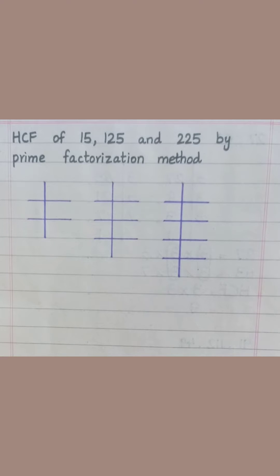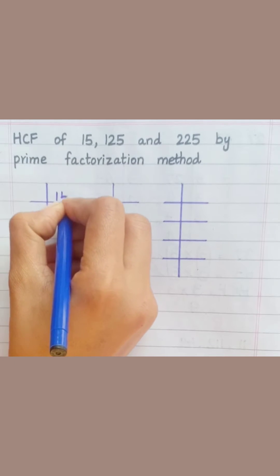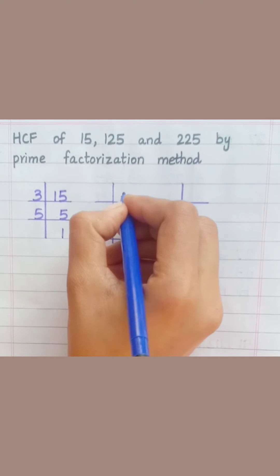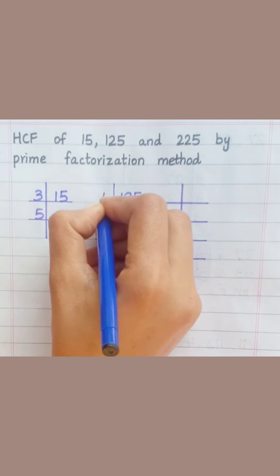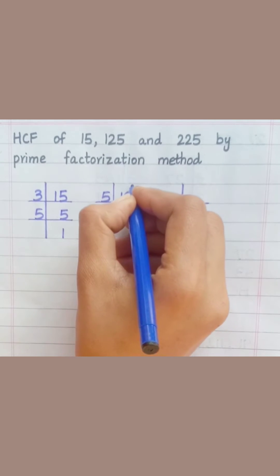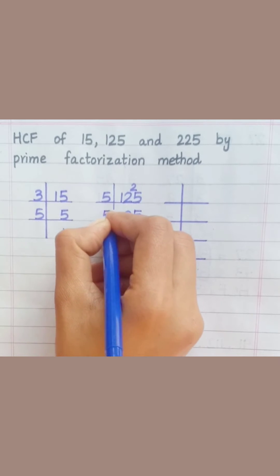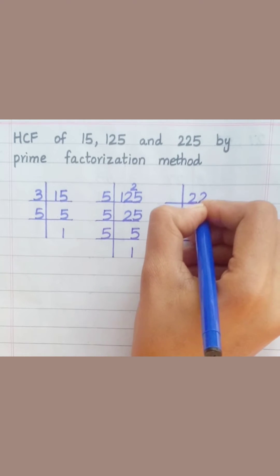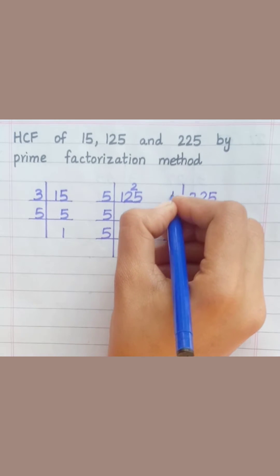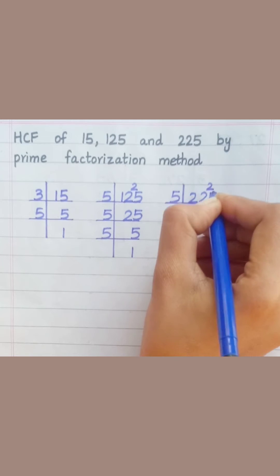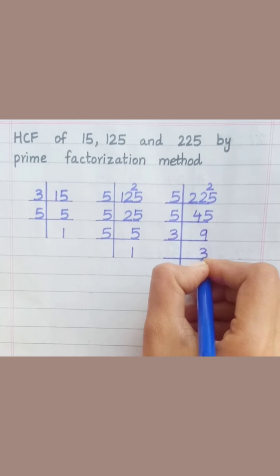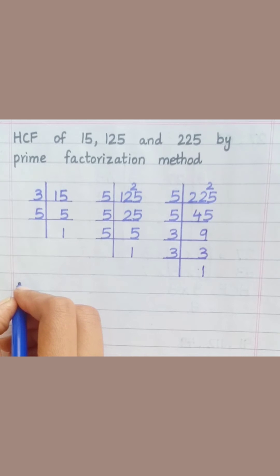HCF of 15, 125, and 225 by prime factorization method. 15 = 3 × 5. For 125: 5 × 25, 5 × 5, giving 5 × 5 × 5. For 225: 5 × 45, 5 × 9, 3 × 3, giving 5 × 5 × 3 × 3.